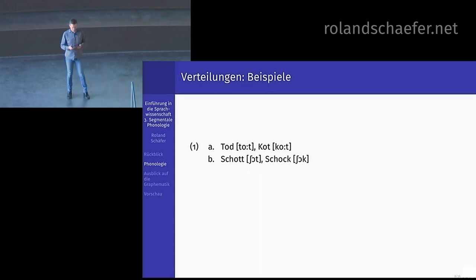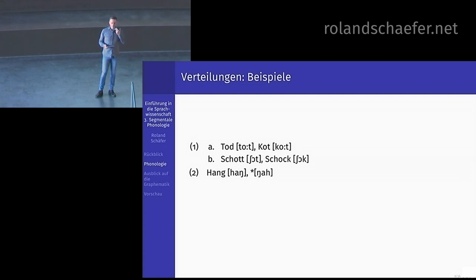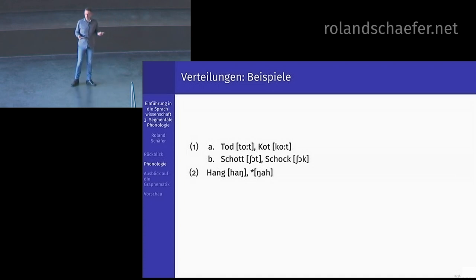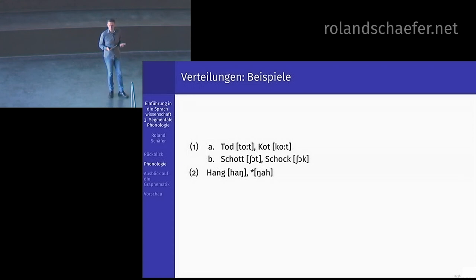Wenn wir das Wort »Hang« betrachten, haben Sie am Anfang einen glottalen Frikativ und einen velaren Nasal am Ende. Umgekehrt geht das nicht: Sie können den velaren Nasal nicht am Anfang haben — »ŋa« geht nicht im Deutschen, in anderen Sprachen schon. Und diesen glottalen Frikativ können Sie nicht am Ende eines Wortes haben. Im Deutschen geht das halt nicht — wir beschreiben primär das Deutsche.